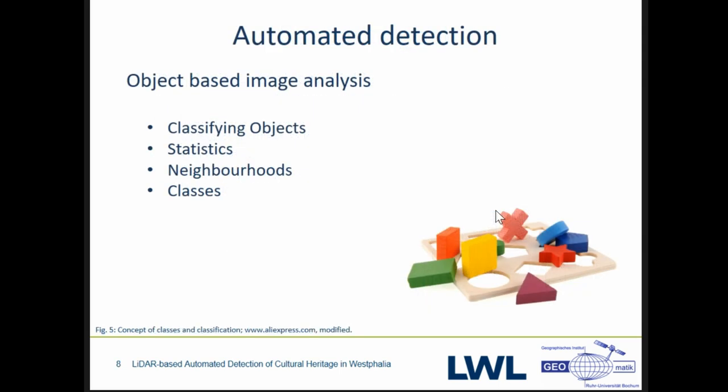A brief summary of object-based image analysis, which is one of the techniques we are using: we classify objects instead of pixels, and the objects represent the structures we want to detect. For these objects, statistics and spatial relationships — including neighborhood relationships to other objects — get calculated. With these statistics you can build classes, such as a class for burial mounds. If an object fits a class description, it gets classified.